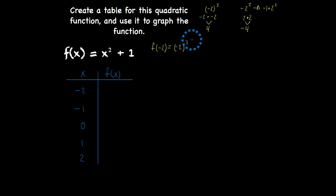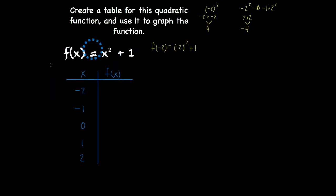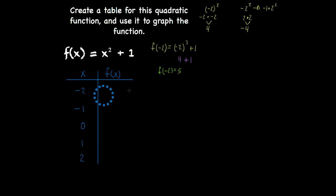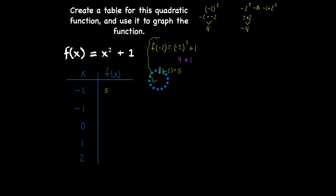So now I have negative 2 squared and I'm going to add 1 to it. We already found out negative 2 squared is 4, and I'm going to take 4 and add it to 1. So f of negative 2 is equal to 4 plus 1, which is 5. When x is negative 2, f of negative 2 is positive 5.